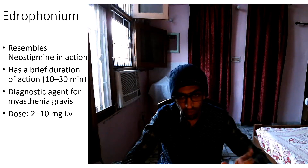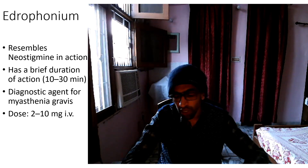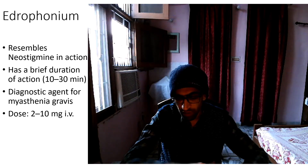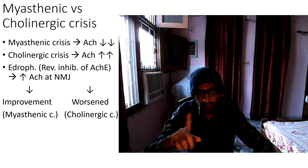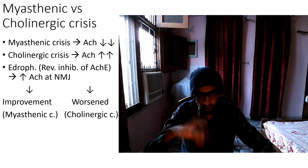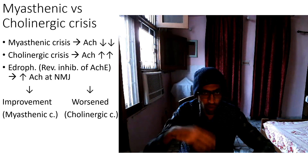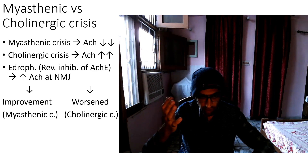Edrophonium is used as a diagnostic agent for myasthenia gravis. A dose of 2 to 10 mg is given intravenously. It helps differentiate a myasthenic crisis from a cholinergic crisis — both presenting with muscle weakness but managed differently.